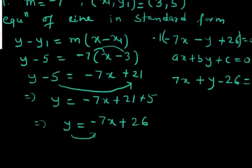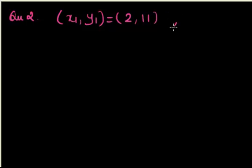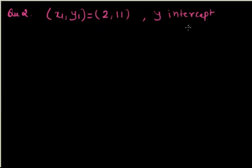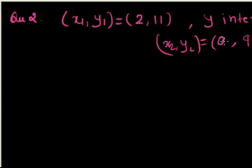Suppose you have another question where x1 y1 is given as 2 and 11, and you have a y-intercept of 9. The y-intercept means the value of x is 0 because it is a point on the y-axis, so y-intercept is nothing but the point 0 and 9. So you have two points x1 y1 and x2 y2. Since you have two points, you can straight away use the two-point form and write the equation in standard form.